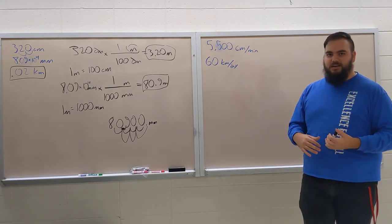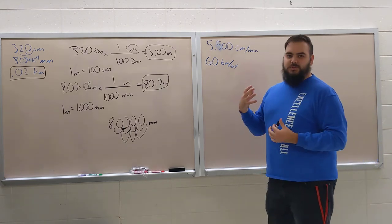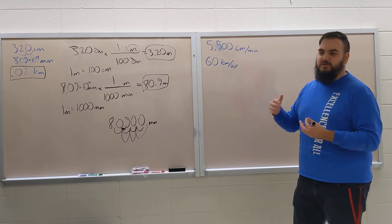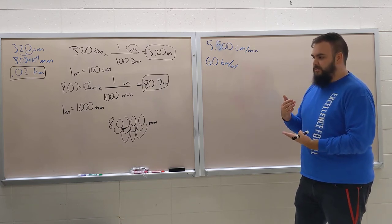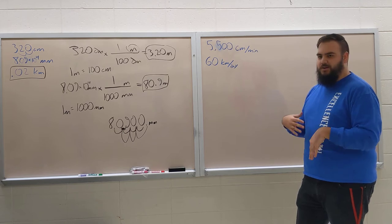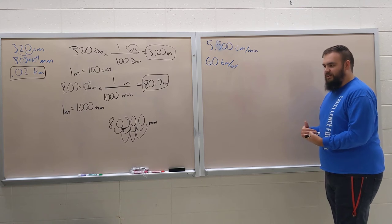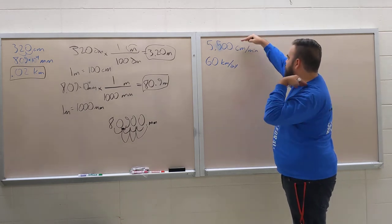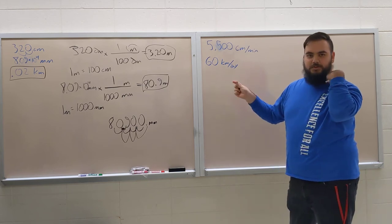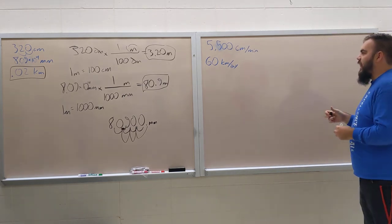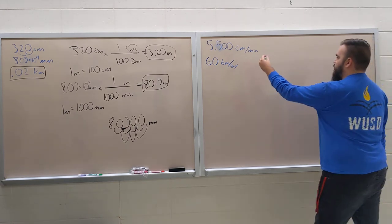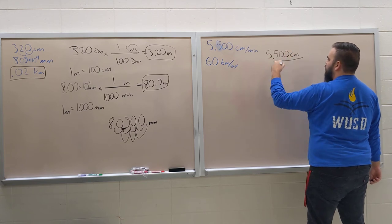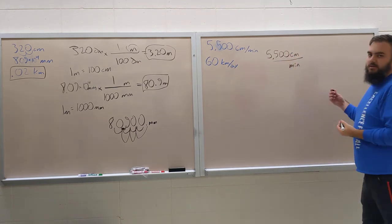Now moving on, in physics we have to deal with something called speed. The units for speed are meters per second—it's distance over time. We're going to possibly have to convert from kilometers per hour or meters per hour or meters per minute or kilometers per minute. We start out with the unit in the top and also the bottom, and we have to cancel both of those out. We're going to convert 5,500 centimeters per minute into meters per second.